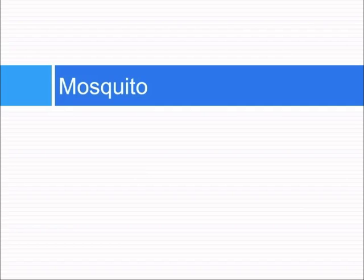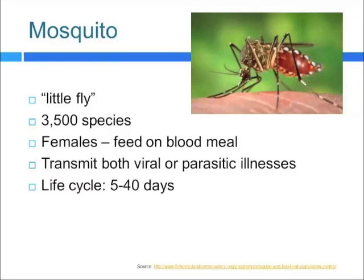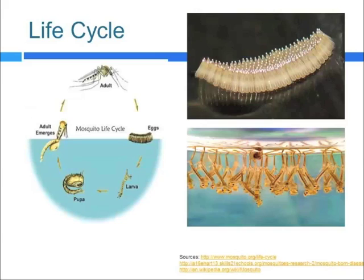A little about our vectors: 'mosquito' basically means 'little fly.' There are more than 3,500 species, and not all mosquitoes feed on blood. When they do feed on blood, it's usually the females of the species. They can transmit both viral and parasitic illnesses. The life cycle ranges anywhere from 5 to 40 days, depending on the climate and the season.